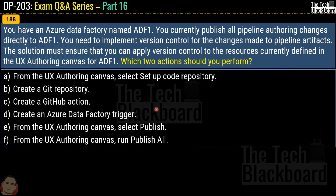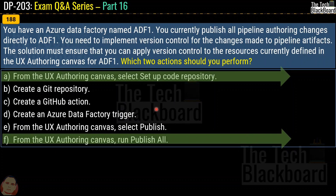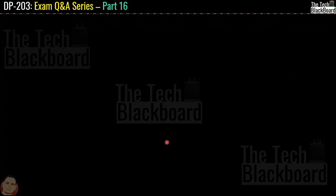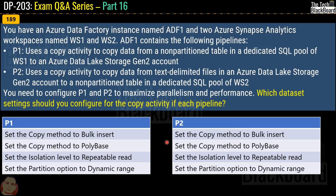Based on the Microsoft documentation we can easily answer this question. The correct answer is option A — from the UX authoring canvas select Setup Code Repository — and option F — from the UX authoring canvas run Publish All.